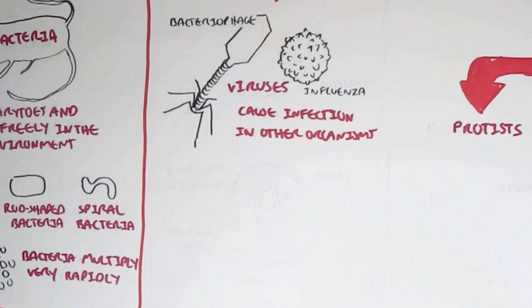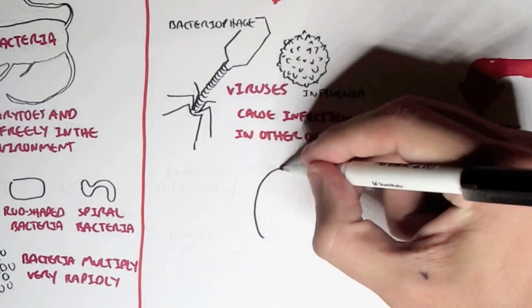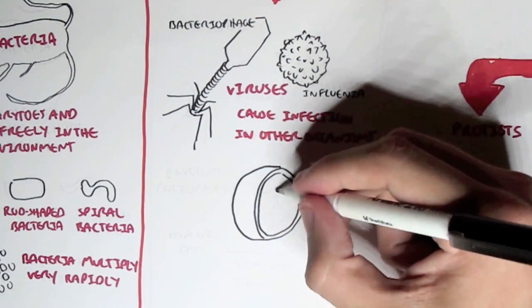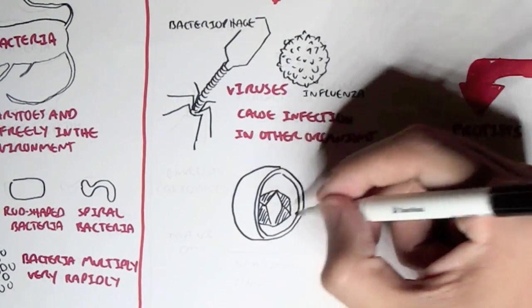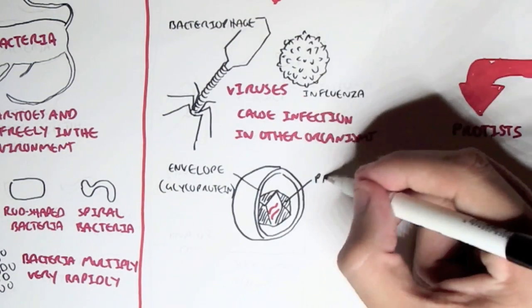Bacteria cause infections in other organisms, such as a bacteriophage in bacteria, and the influenza virus in humans. And now the typical structure of a virus, they essentially have an outer envelope, made up of usually glycoproteins, and an inner protein, which protects the genetic material, either RNA or DNA.